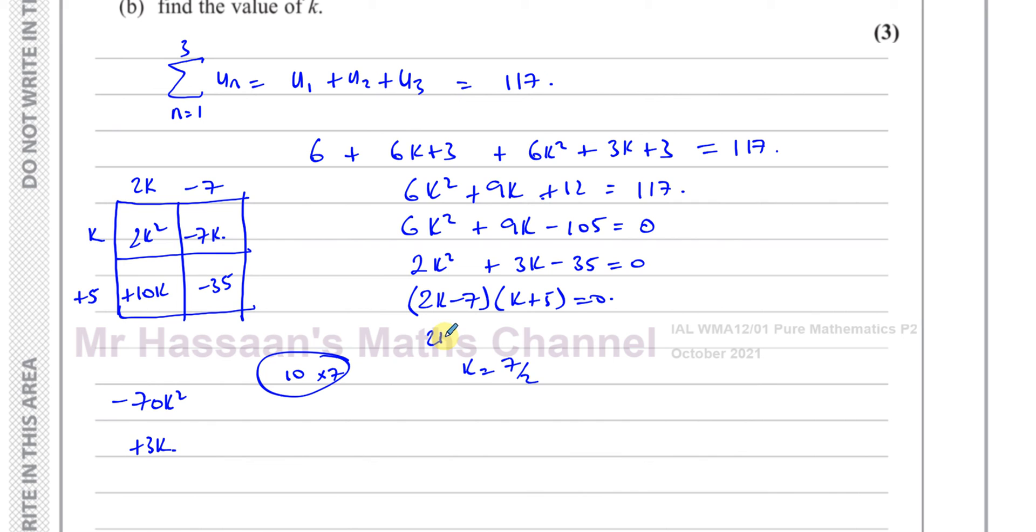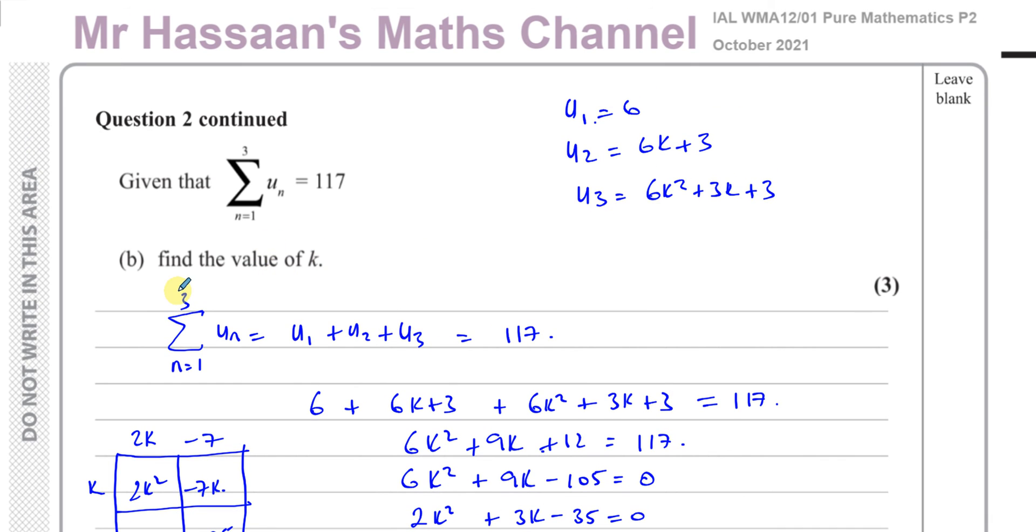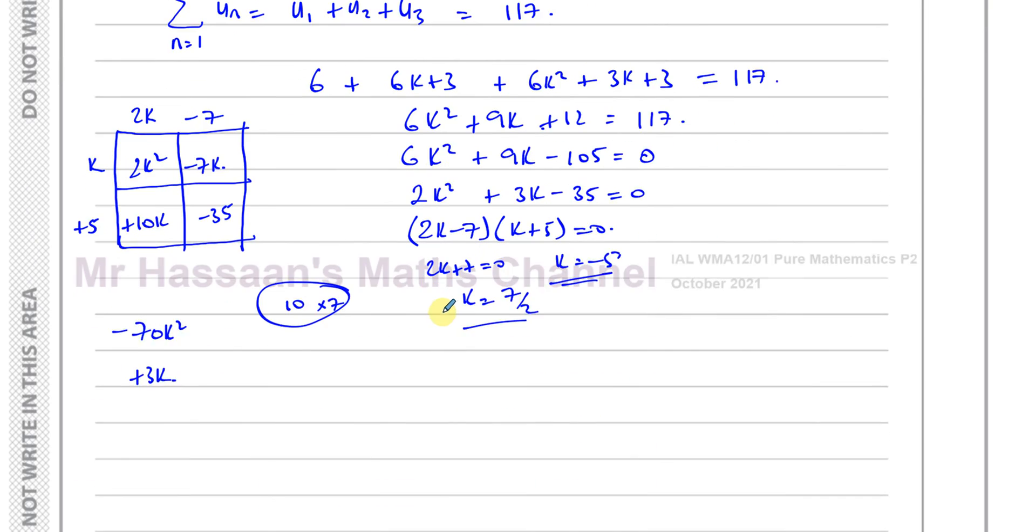Because 2K minus 7 equals 0, or K equals negative 5. Those are the two values of K. Let's see what they're saying in the question. It says K is a positive constant, so that's very important for us to look back at.